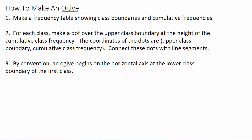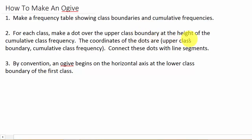In this video we're going to learn how to make an ogive. Here are the three steps: first, make a frequency table showing class boundaries and cumulative frequencies. Second, for each class make a dot over the upper class boundary at the height of the cumulative class frequency. The coordinates of the dots are (upper class boundary, cumulative class frequency). Third, connect these dots with line segments.